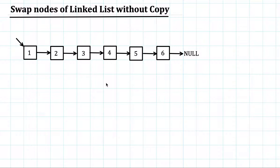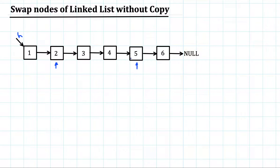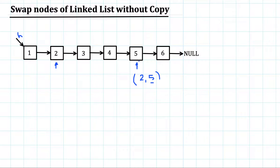In this video we are going to see how to swap the nodes of a linked list without copying them. If we are given a linked list and we are asked to swap nodes 2 and 5, one easy way is to traverse the list, find 2, put 5 there, continue to find 5, and put 2 there - simply copying these values.